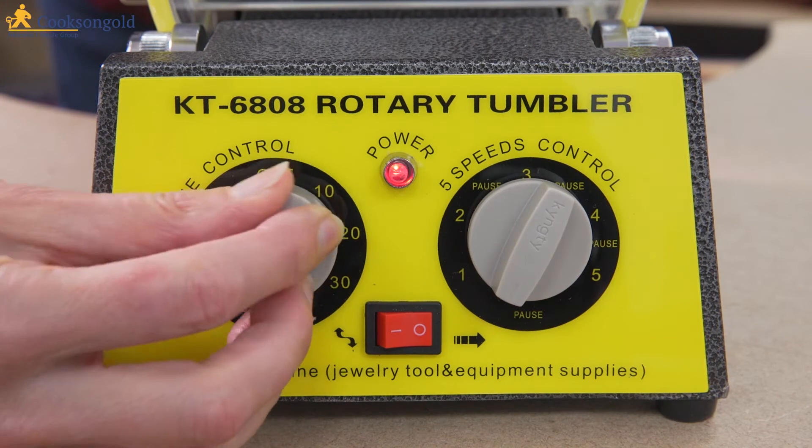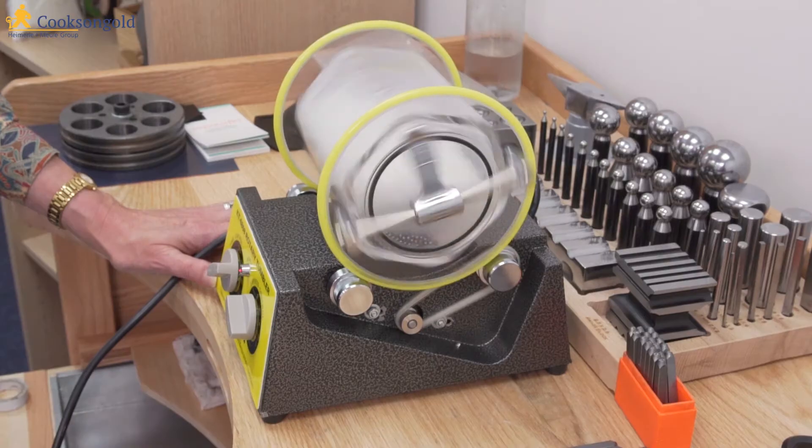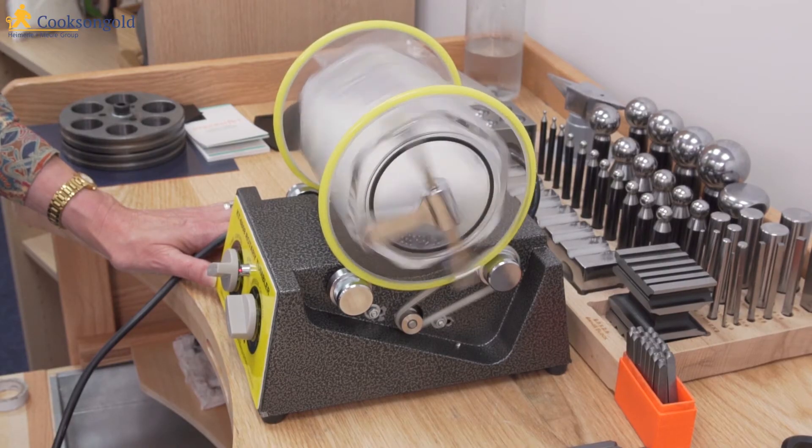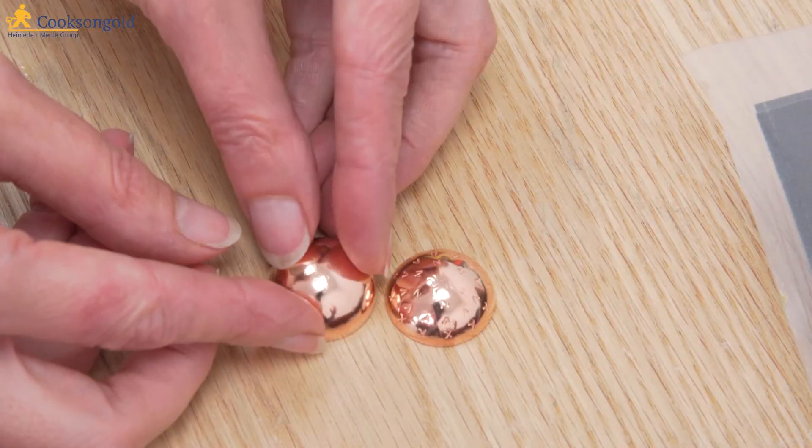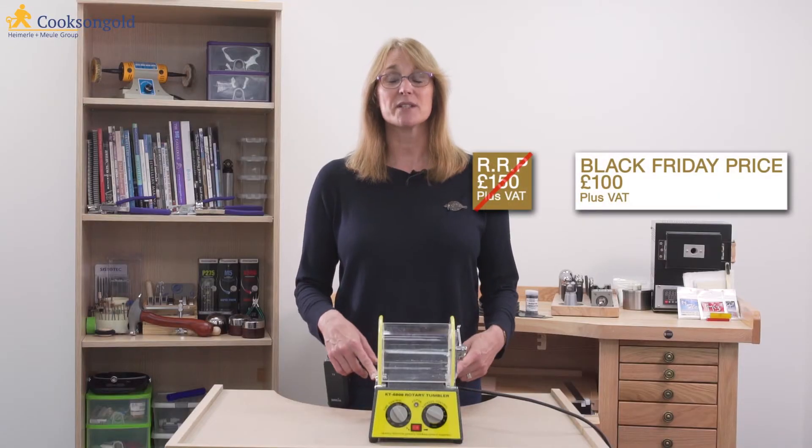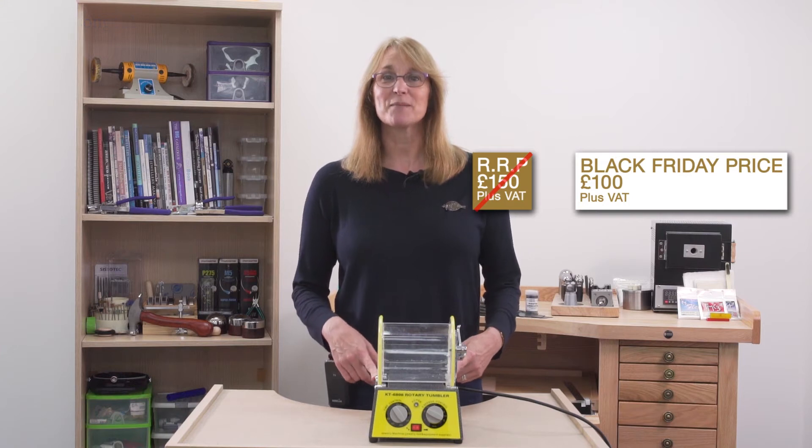The jeweller's barreling machine is great for hobbyists and workshop due to its size and power. The recommended retail price for this barreling machine is £150 but on Black Friday it's £100 plus VAT.